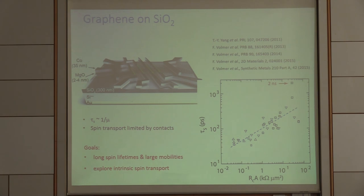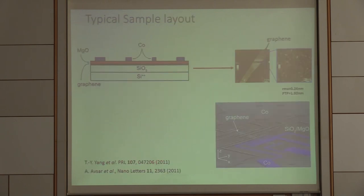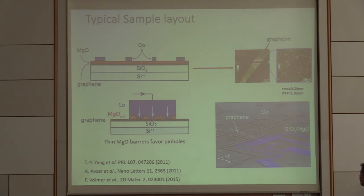So the goal is now, what can we do in order to get longer spin lifetimes and larger mobilities? And I think an important step there is understanding what happens at the contacts. On these devices, we were looking quite carefully on this MgO graphene interface. And what one can quite clearly see by various experiments now is that we are limited by pinholes.